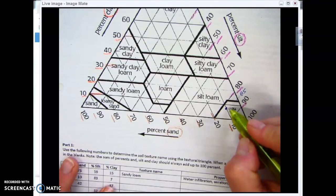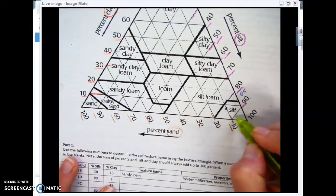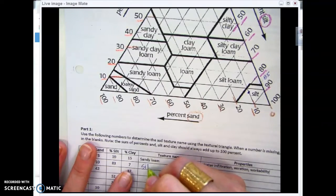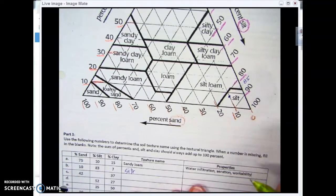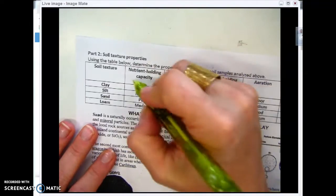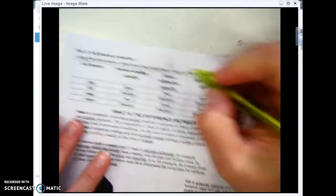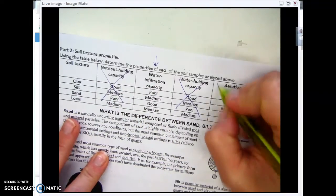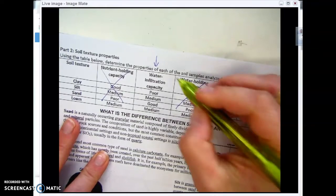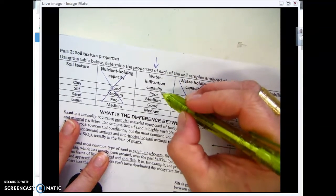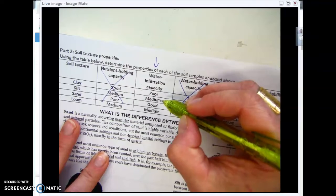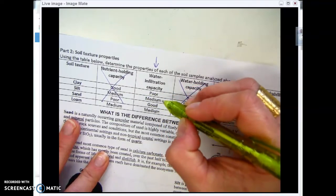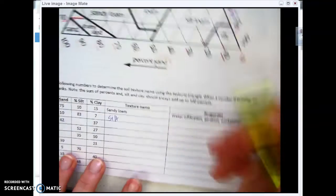This is going to be a silt sample, so I'm going to write silt here. For this part, I really want for you all on the back just to be focusing on the water infiltration capacity. Infiltration is how well water is moving through these soil particles. For silt, that has a medium water infiltration capacity.